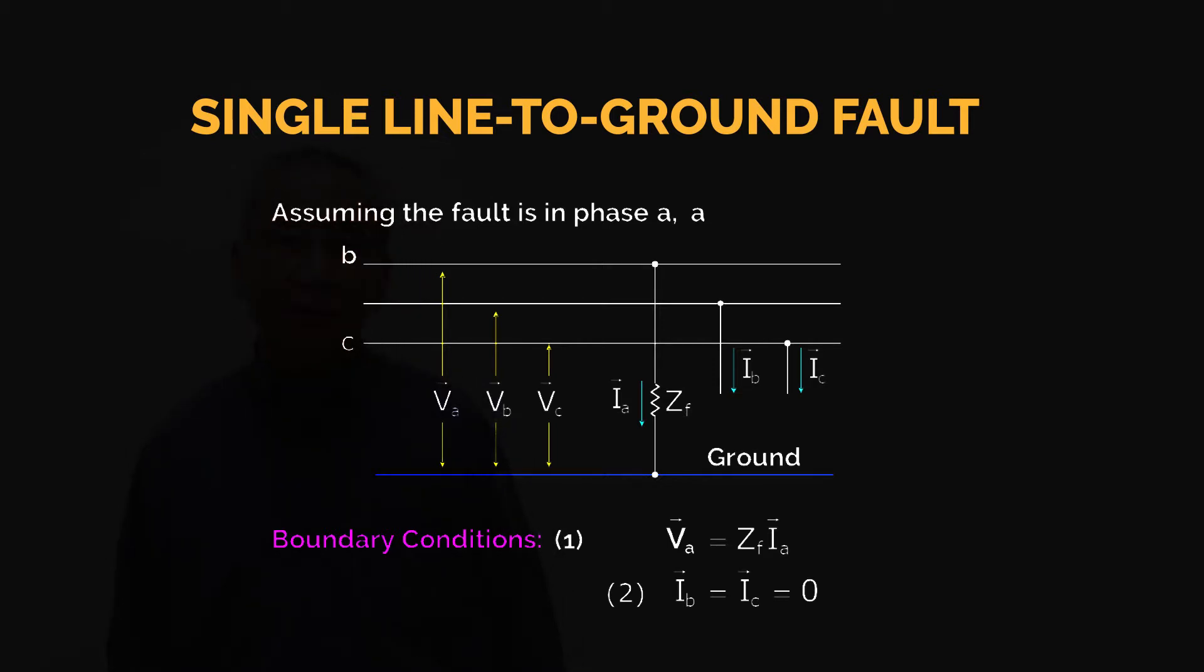Denoting the boundary conditions: VA, since line A or phase A is faulted to the ground, VA now is equal to IA multiplied by ZF, the fault impedance. And IB and IC are both equal to zero. So this will be our initial boundary conditions.